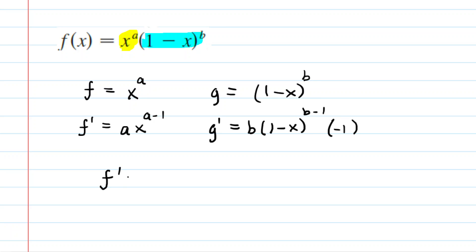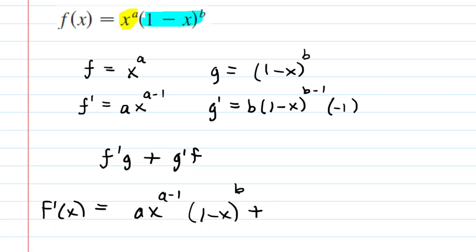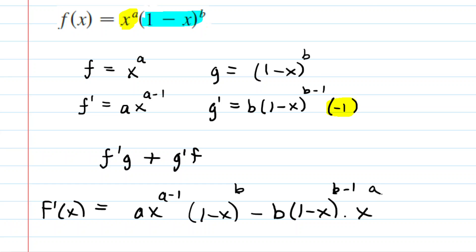We now plug everything into the product rule equation. I like to call this equation 'fig plus gif' — it's a little mnemonic for the product rule. So f prime of x equals f prime times g, which is a times x to the power of a minus 1 times 1 minus x to the power of b, plus g prime times f. Be careful here: g prime includes a negative 1, so you're actually subtracting — minus b times 1 minus x to the power of b minus 1, multiplied by x to the power of a. That is our derivative.